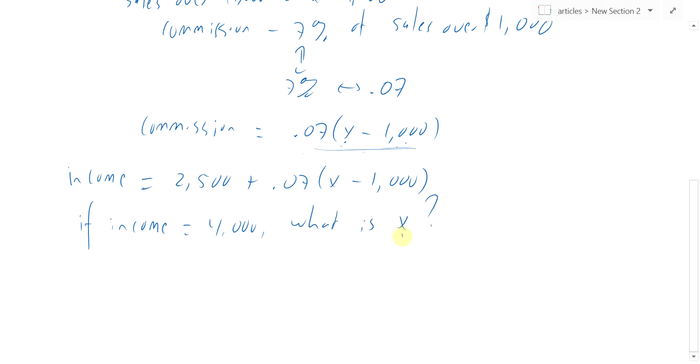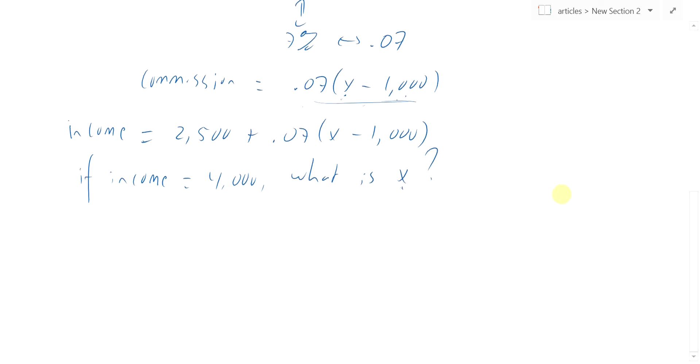How much does this person have to sell? That sets up an equation. If we want the income to be $4,000, we can just plug in $4,000 for the income, because that's how much they want. Equals $2,500, the base salary, plus 0.07, X minus $1,000.